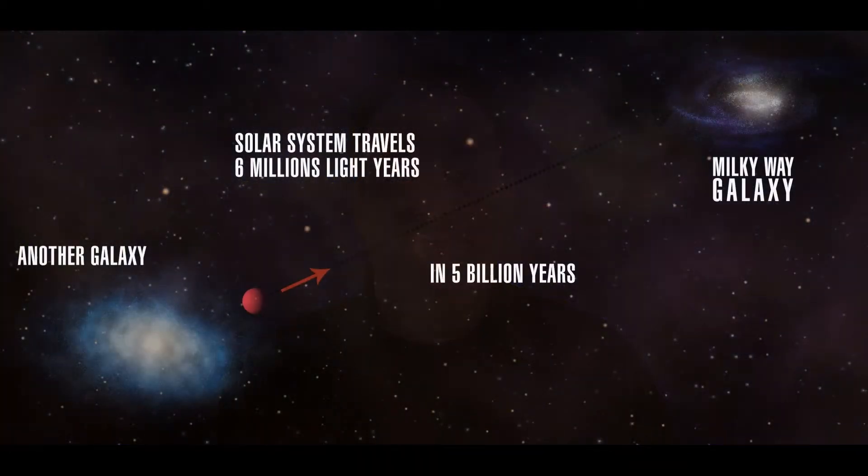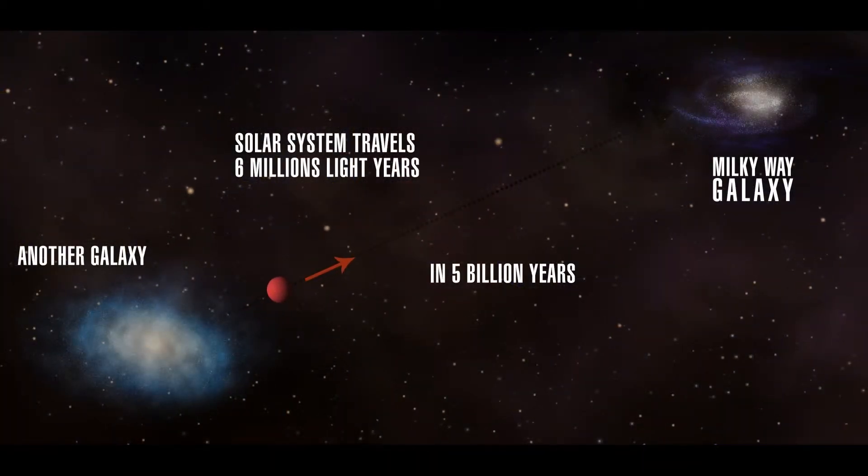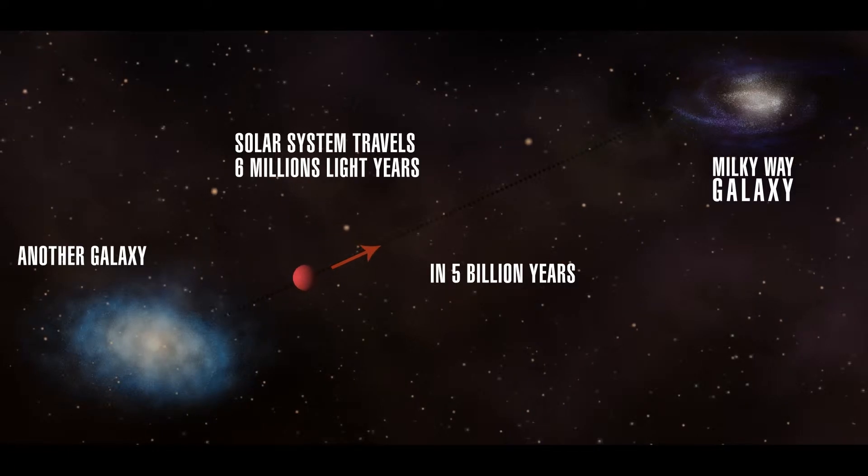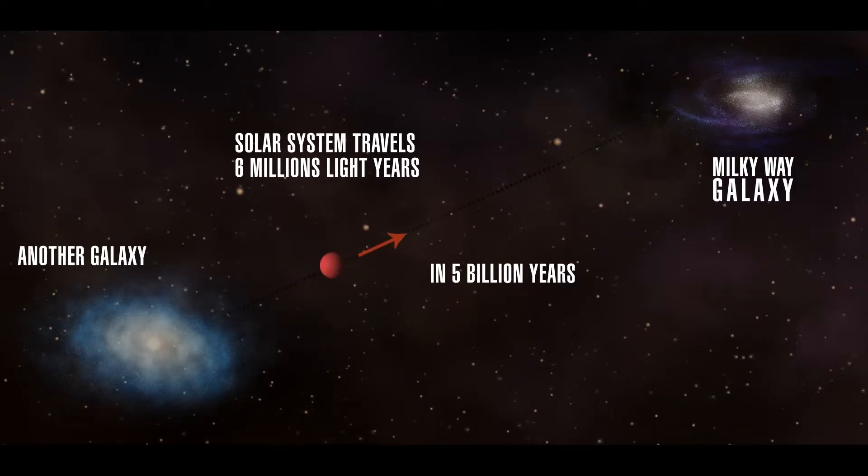The last collision might have occurred over 5 billion years ago, setting our solar system's course and speed. At its current velocity, the solar system moves 6 million light-years in 5 billion years.